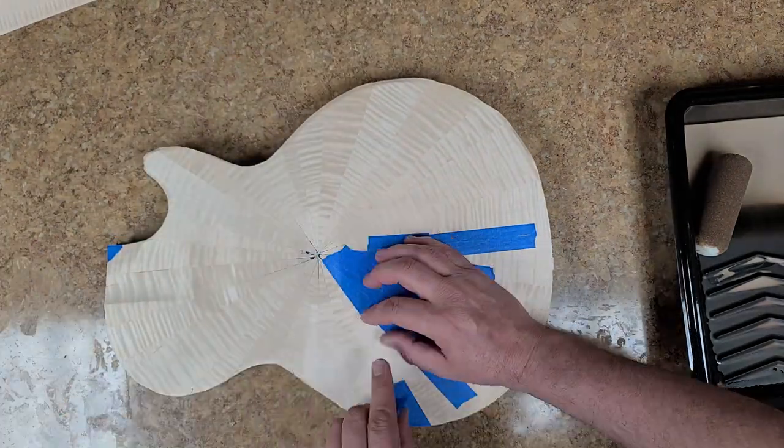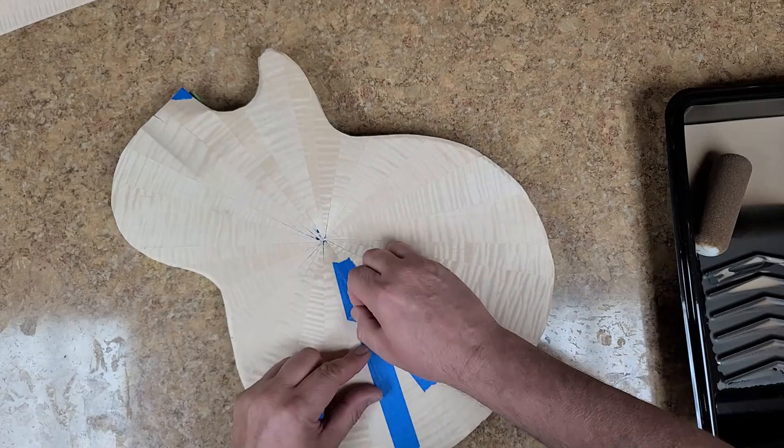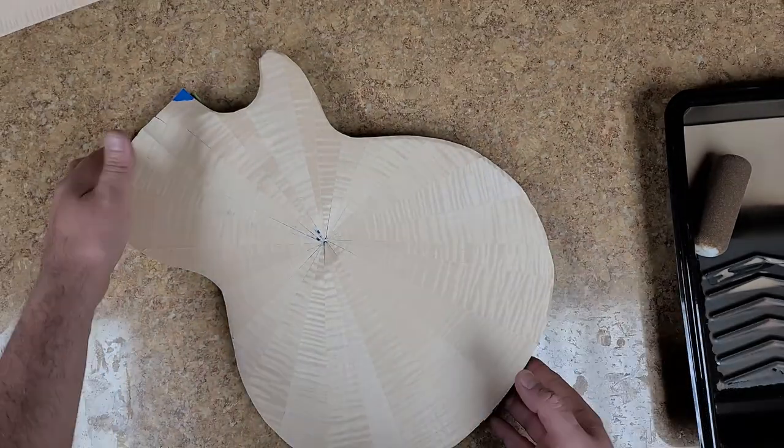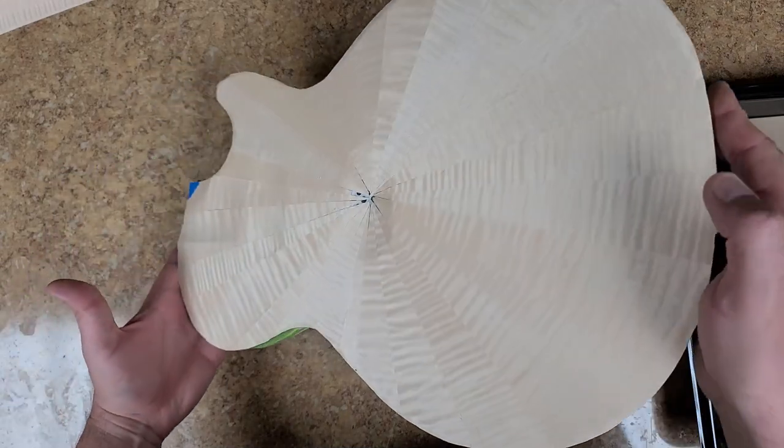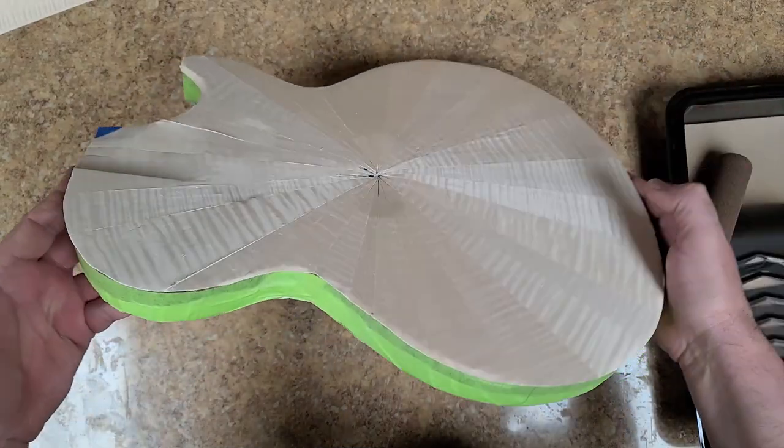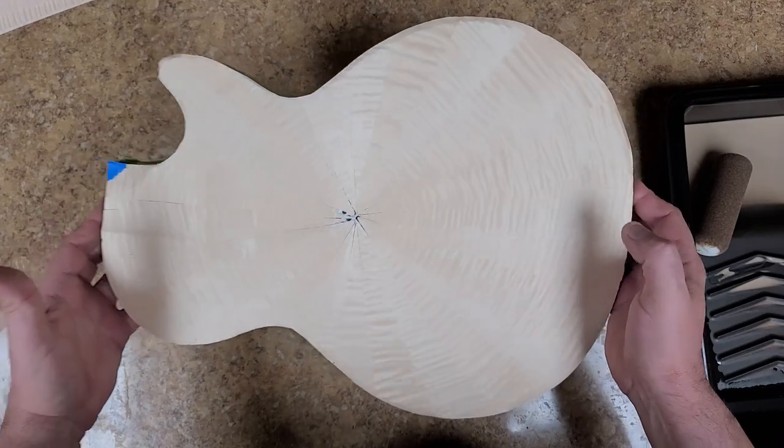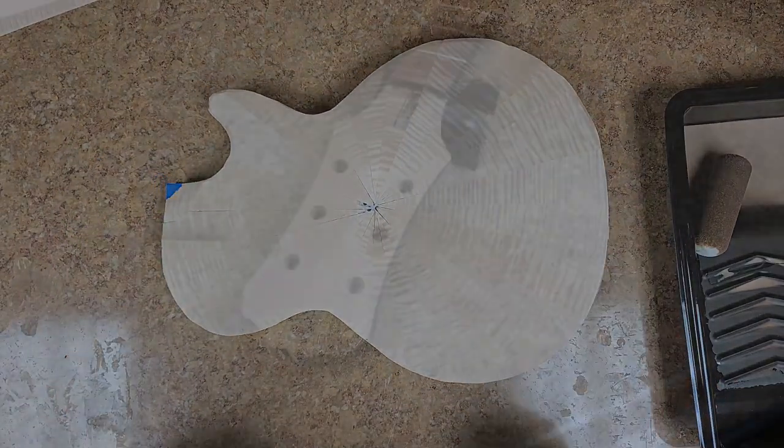Now, where the center is, that's where the pickup is. And I'm not really too concerned about how that looks because that's going to be cut out and then the pickup's going to be covering it. So there she is, nice and flat. Actually worked out pretty damn good. So I'll have to do the headstock now.